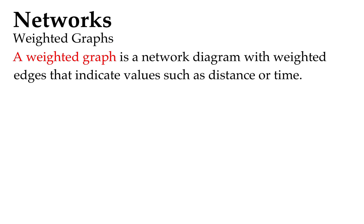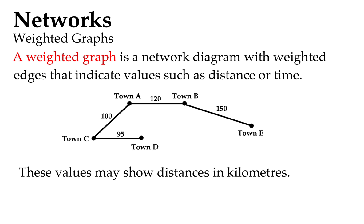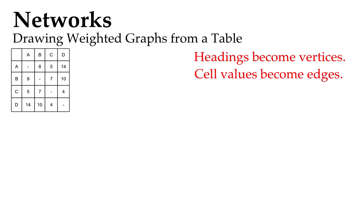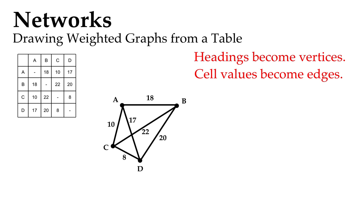Weighted graphs is a network diagram with lots of weighted edges, and they indicate values such as distances and stuff. We're pretty familiar with those sorts of things. They may show distances in kilometers, it might be steps between two trees or whatever. To draw it from a table: our headings become our vertices and our cell values, the numbers, become the edges, the weighted edges.